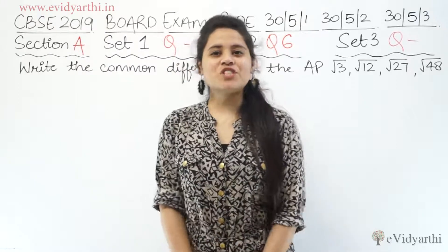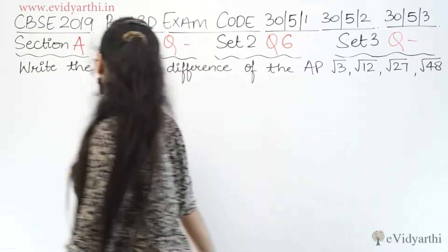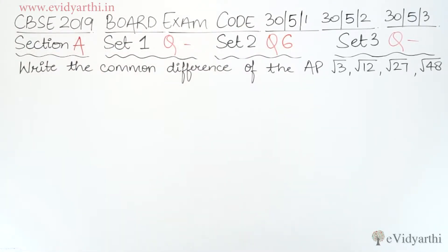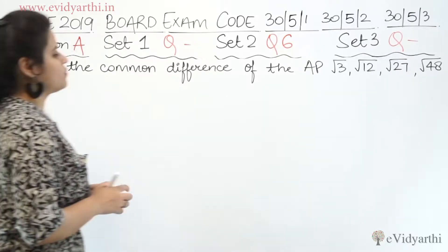Moving to the next question. This is question number 6 of set number 2. The question says: write the common difference of the AP — √3, √12, √27, and √48. This is the AP and we need to find the common difference.